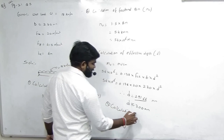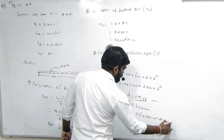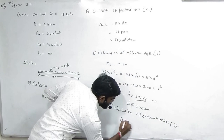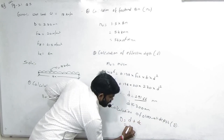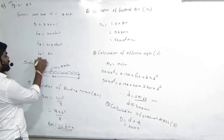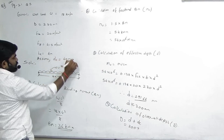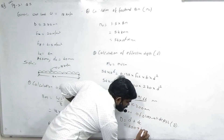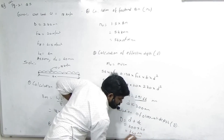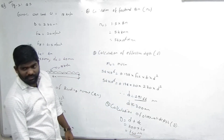54 × 10⁶ = 0.138 × 20 × 230 × d². Solving for d: small d = 291.66 mm, approximate to 300 mm. Then step 4: overall depth. Capital D = d + DC = 300 + 40 = 340 mm.